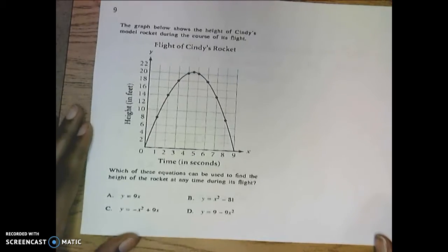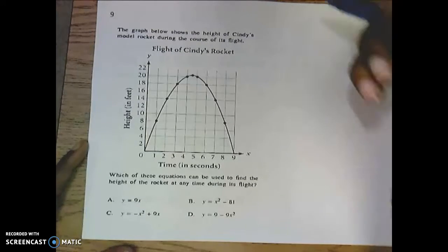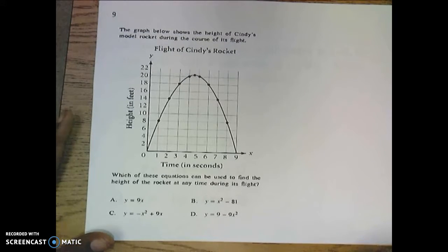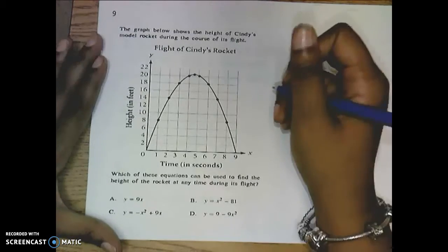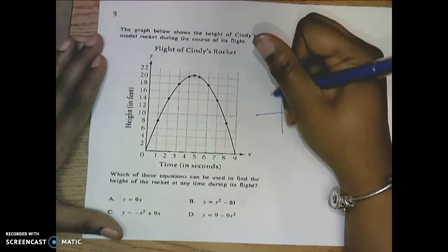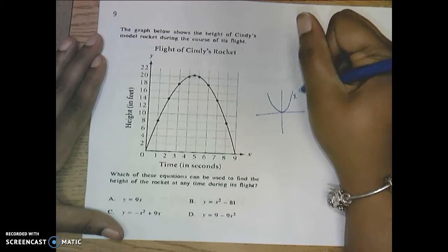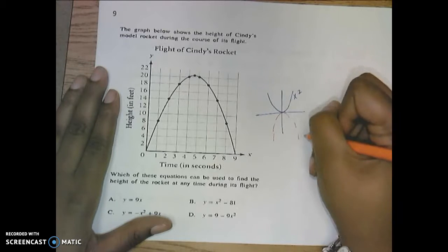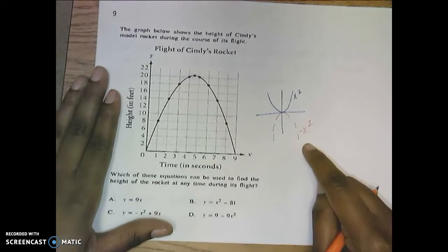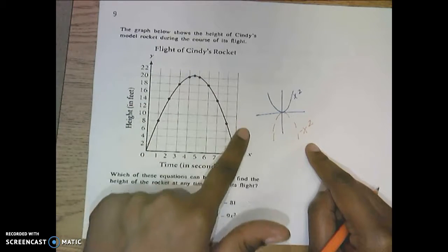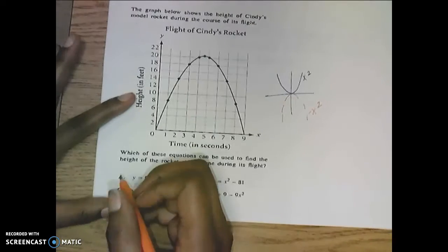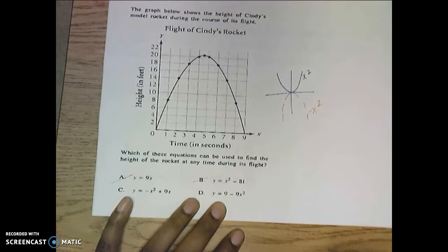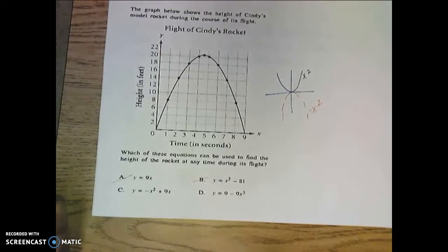Number 9 could kind of be viewed as a throwback problem because this is something that you may have seen in Algebra 1. The graph shows the height of Cindy's model rocket during the course of a flight, which these equations can be used to find the height of the rocket at any time during this flight. What I first need you to understand is that the parent function of all parabolas looks something like this. Once we decide that we are going to flip this thing upside down, what happens is we still have a graph of x squared, but it becomes negative. Because this parabola is going upside down or it opens downward, A and D are both not answers. Why? Because there is no negative in front of those values. So there is a negative here and here.